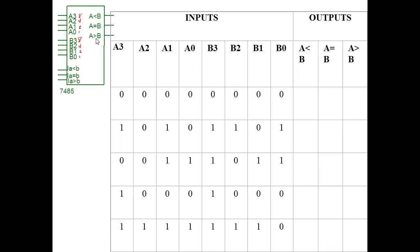If you remember from grade school, the alligator eats the biggest one. So if the mouth opens toward B, then B would be larger; if it opens toward A, then A would be larger. Let's write that up so we remember what these numbers represent — it's just a binary representation of those numbers, and we're going to compare the two.